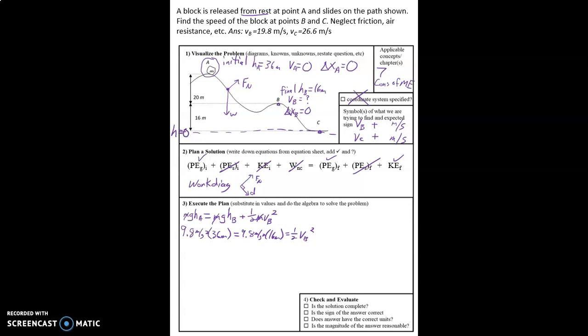9.8 meters per second squared times 36 meters equals 9.8 meters per second squared times 16 meters plus one half VB squared. And then we'll do the algebra here real quick. We'll go ahead and plug in some numbers. 9.8 times 36, 352.8. What are the units? We've got meters per second squared times meters. We get meters squared per second squared. And then on the other side, same units, but different number. It's going to be 156.8 meters squared per second squared plus one half VB squared.